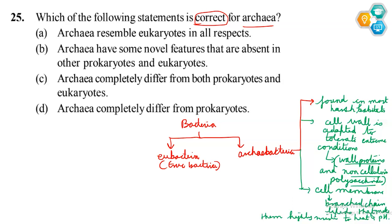Now let's try to eliminate the options. Option A says they resemble eukaryotes in all respects — no, because prokaryotes and eukaryotes differ significantly. Archaebacteria have some novel features absent in other prokaryotes and eukaryotes, related to their cell membrane and cell wall. Option C says they completely differ from both prokaryotes and eukaryotes — no. Option D says they completely differ from prokaryotes — no, they are prokaryotes. So option B is the correct answer.